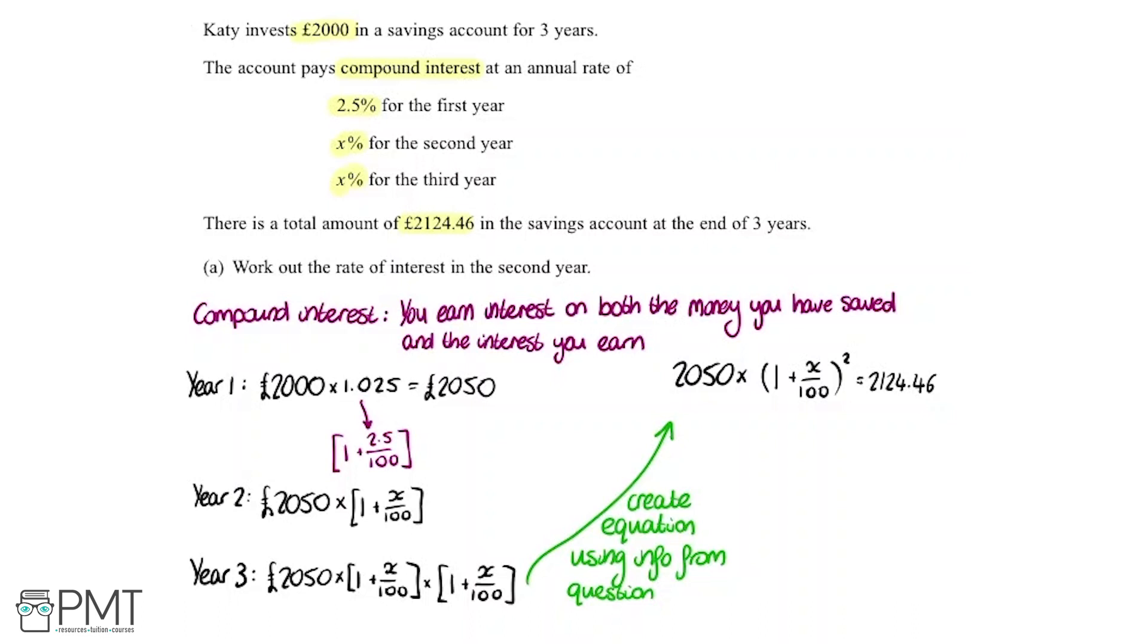Now what we need to do is solve this to work out what x is. I'm going to start by dividing both sides by 2050, which is going to leave us with 1 plus x over 100 squared. Using the calculator, we get this going to be 1.0363 dot dot dot. But I'm going to leave the full long number stored in the calculator so we can keep on using it.